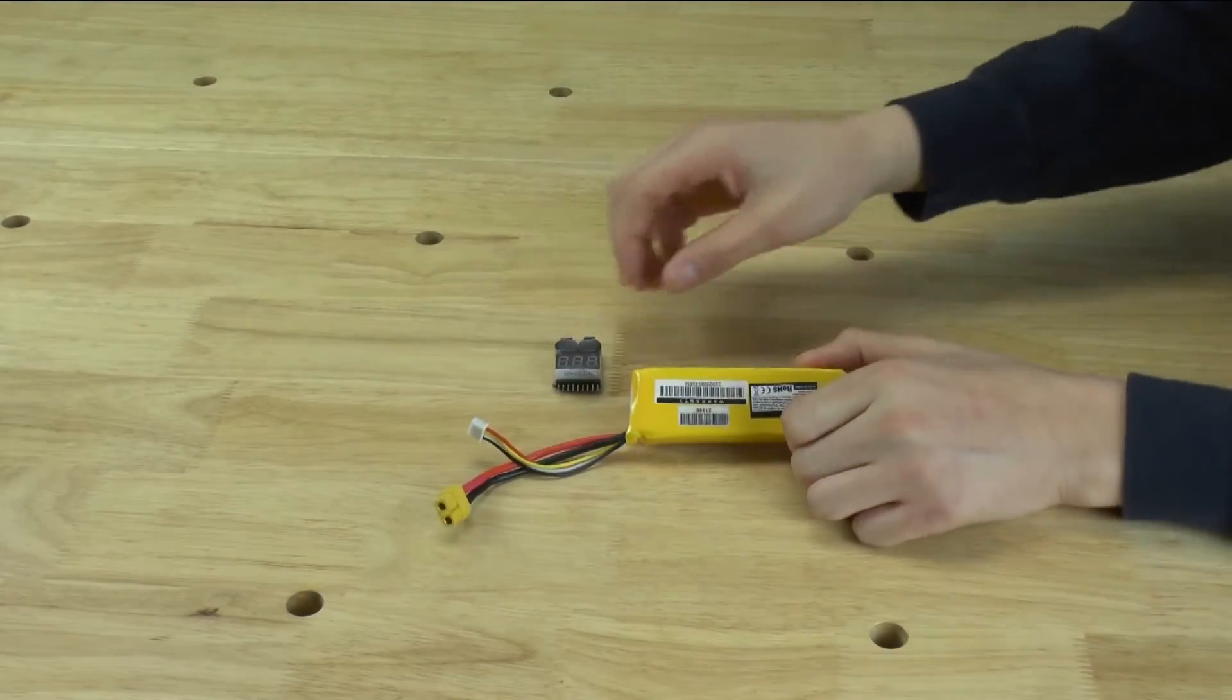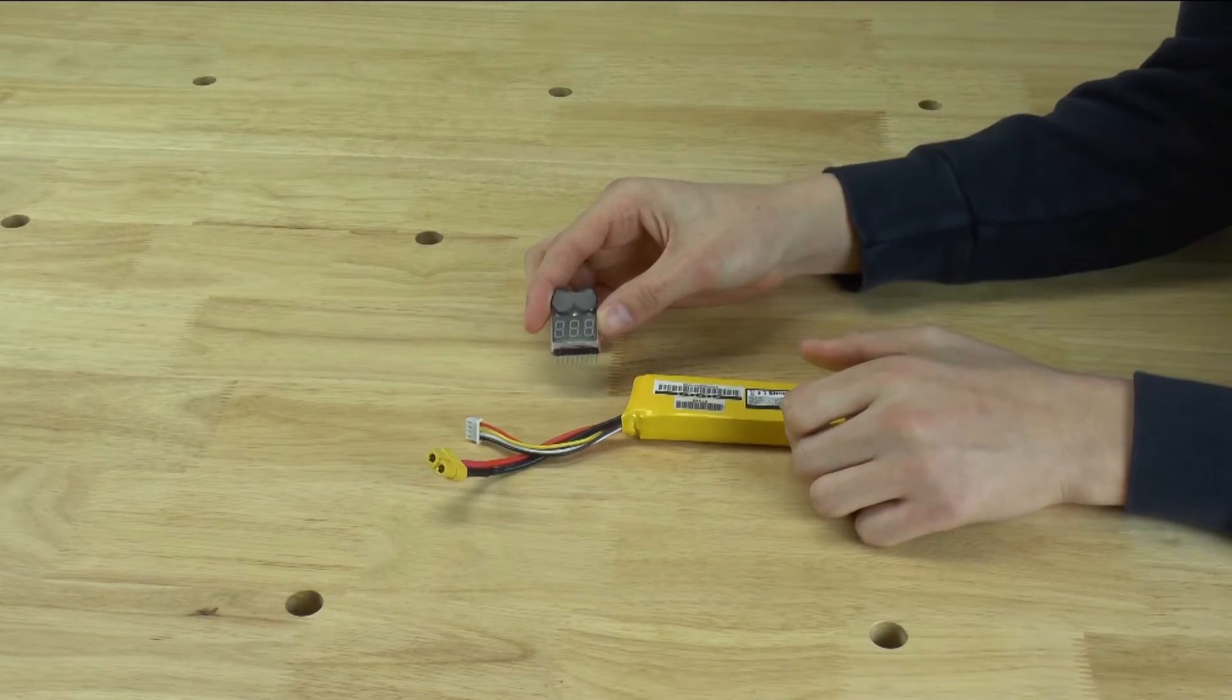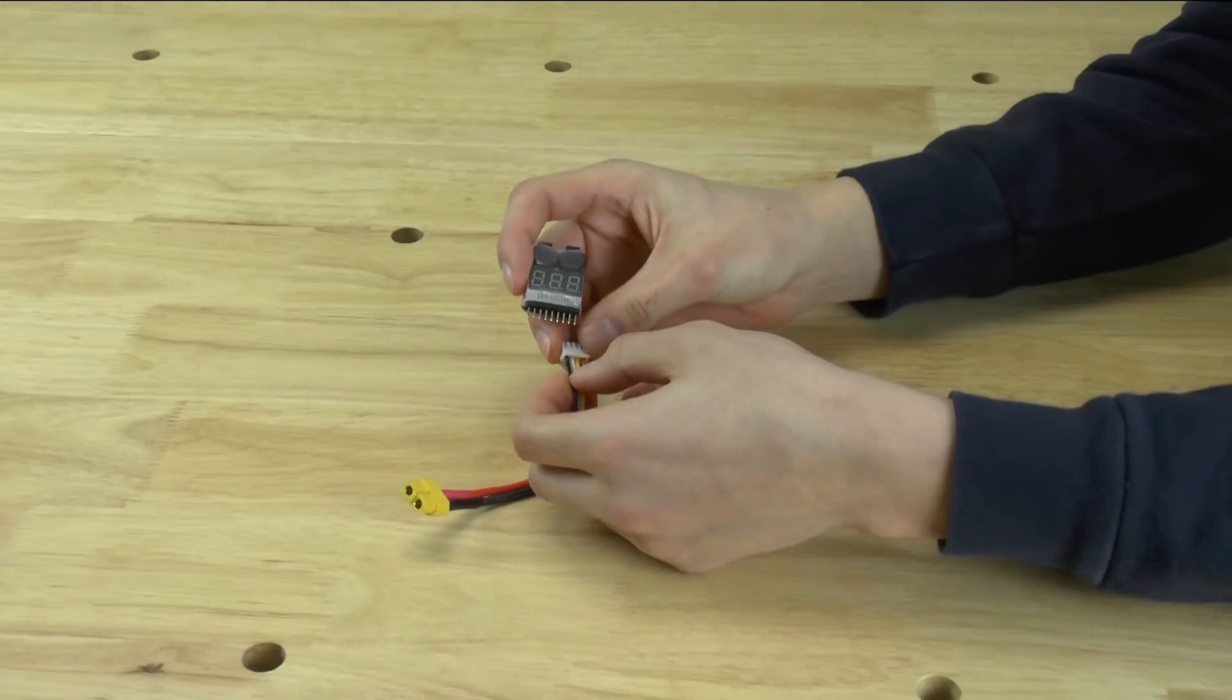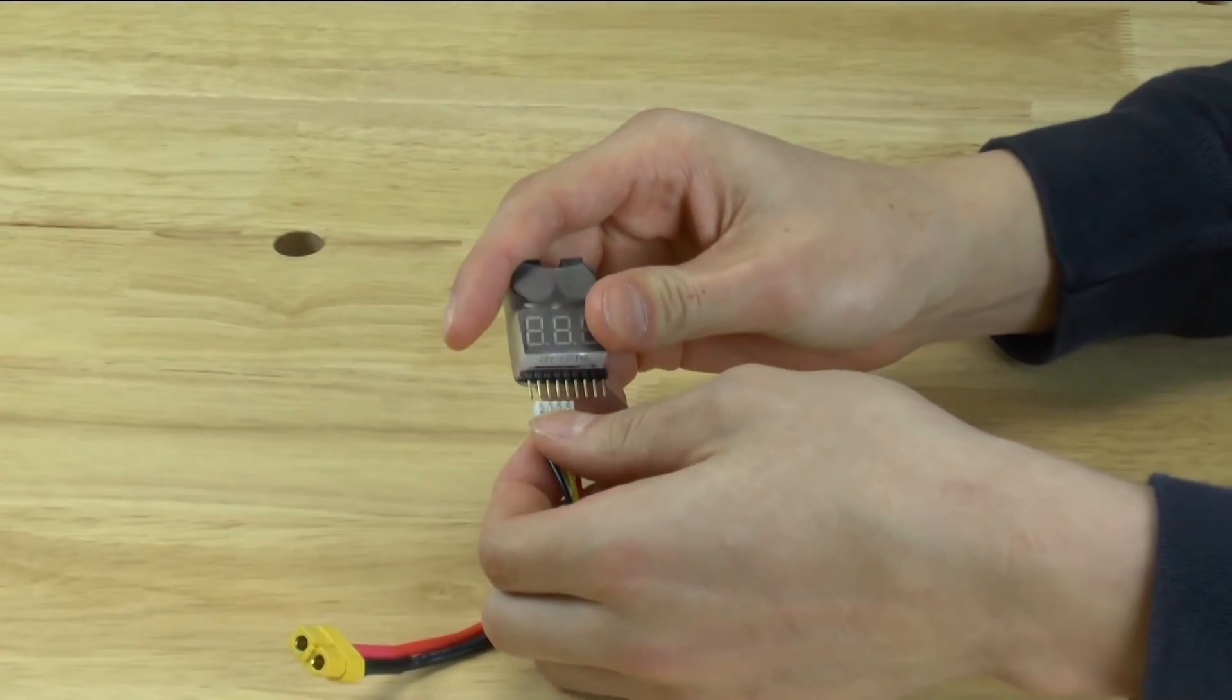Here I have a three cell battery and I'm going to test it with this battery tester. First thing I'm going to do is connect it. When you're connecting it, you want the ground wire, which is this black one, to be on the very first pin.